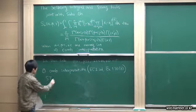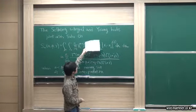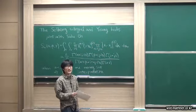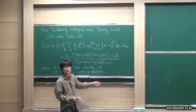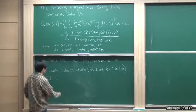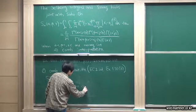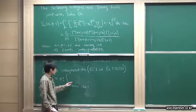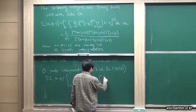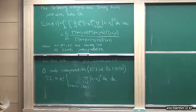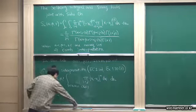The Selberg Integral, with alpha equals beta equals 1, simplifies so those factors are gone. Since we have an absolute value, if we exchange x_i and x_j the integral remains the same — it is symmetric in all variables x_1 through x_n. So we can write n factorial times the integral over the region x_1 less than x_2 less than dot dot dot less than x_n.